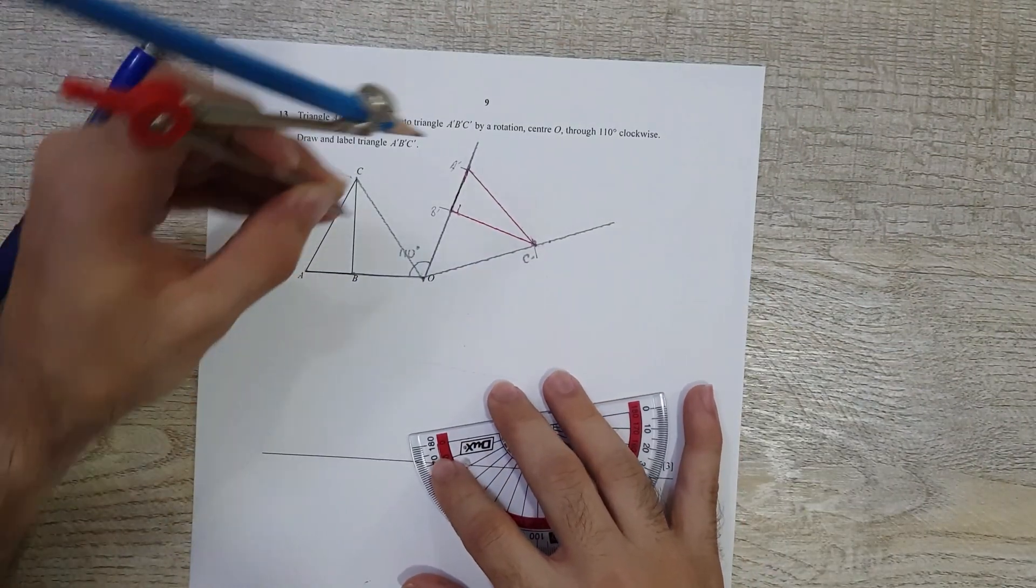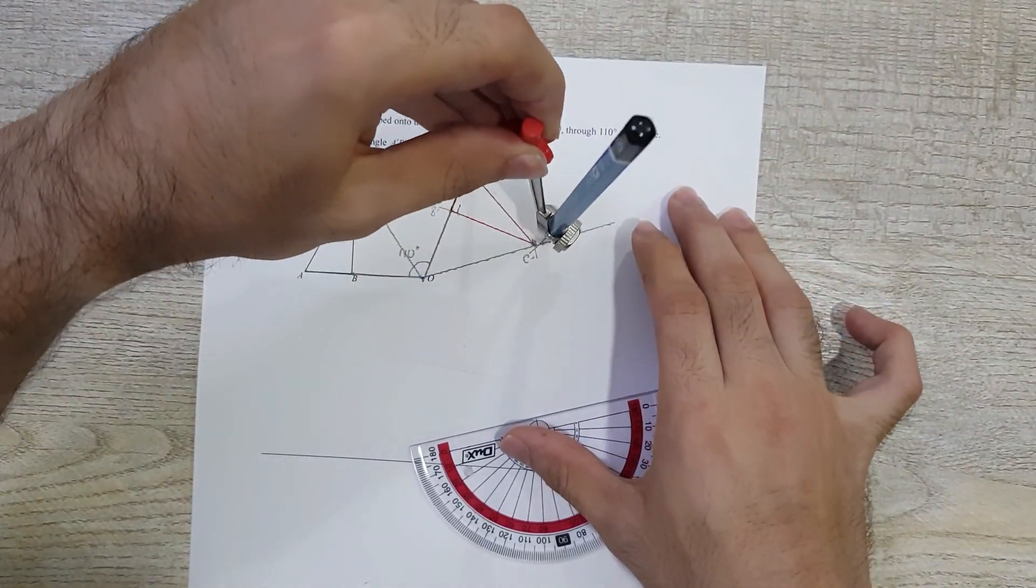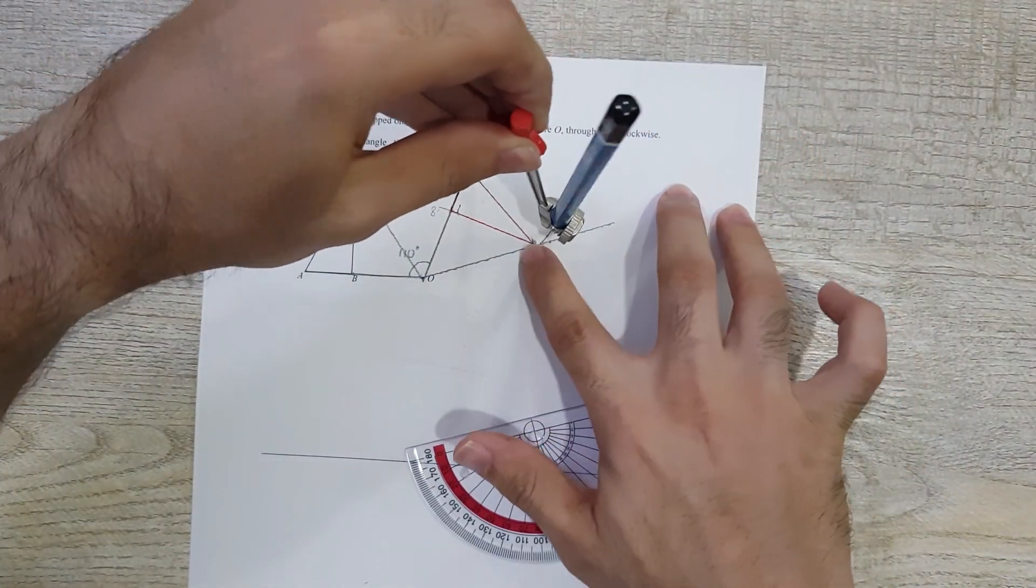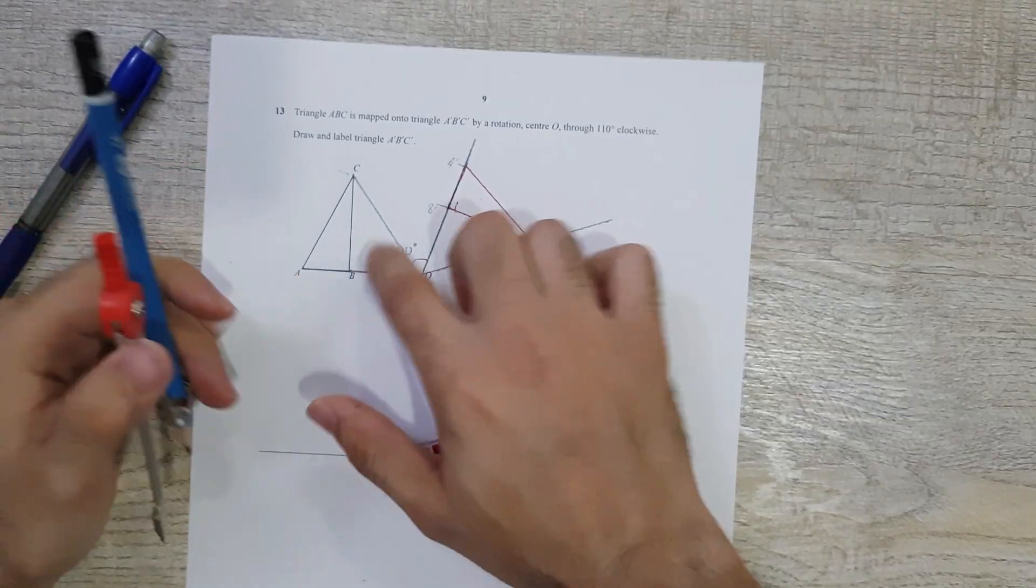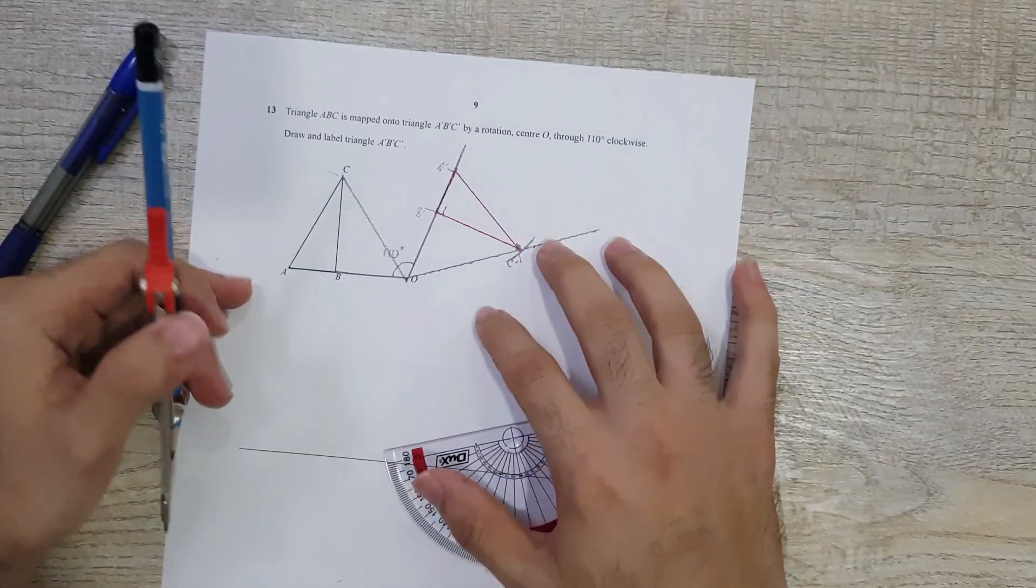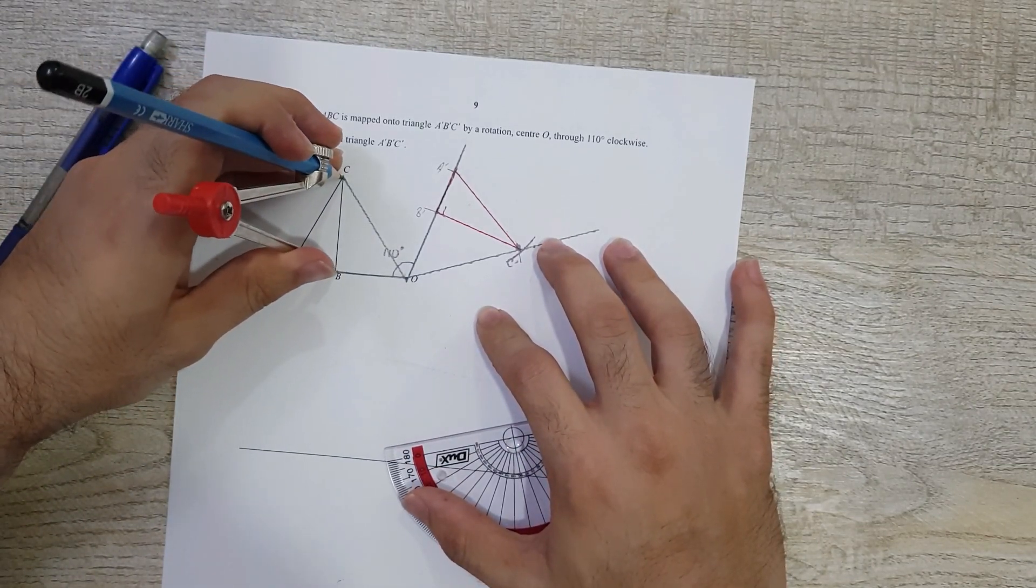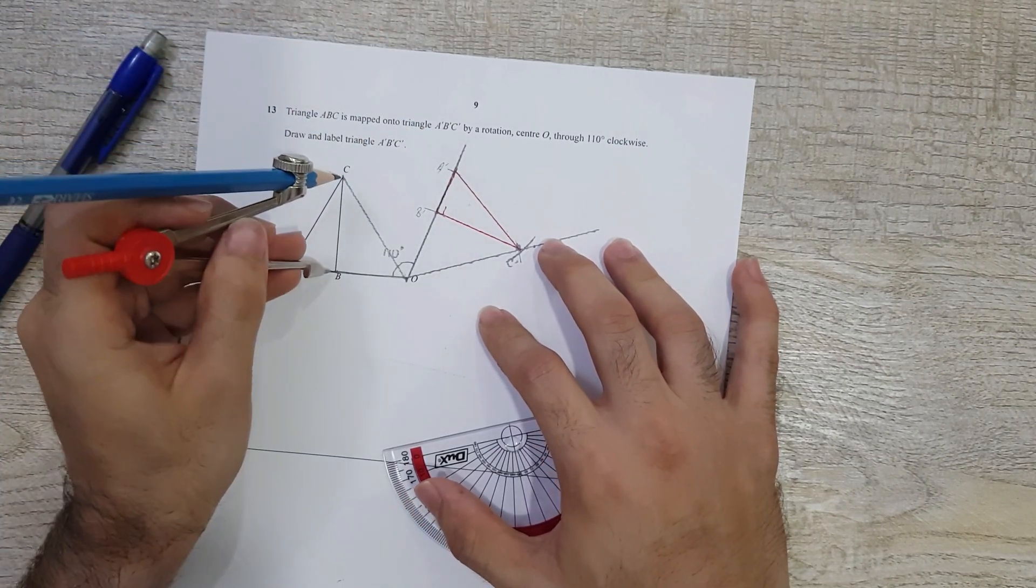The idea that my student came up with was this: let's find out how far C is from A with the help of a compass, and then you do the exact same thing over here so that you know point C is somewhere over here. Because even after you've rotated it, rotation as we know is isometric, which means the size of the triangle remains the same.